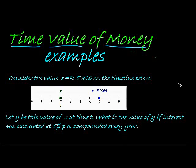Okay, so here's an example of time value of money. Consider the value X equals 5306 Rand on the timeline below. There we see X, 5306 Rand at year 7.